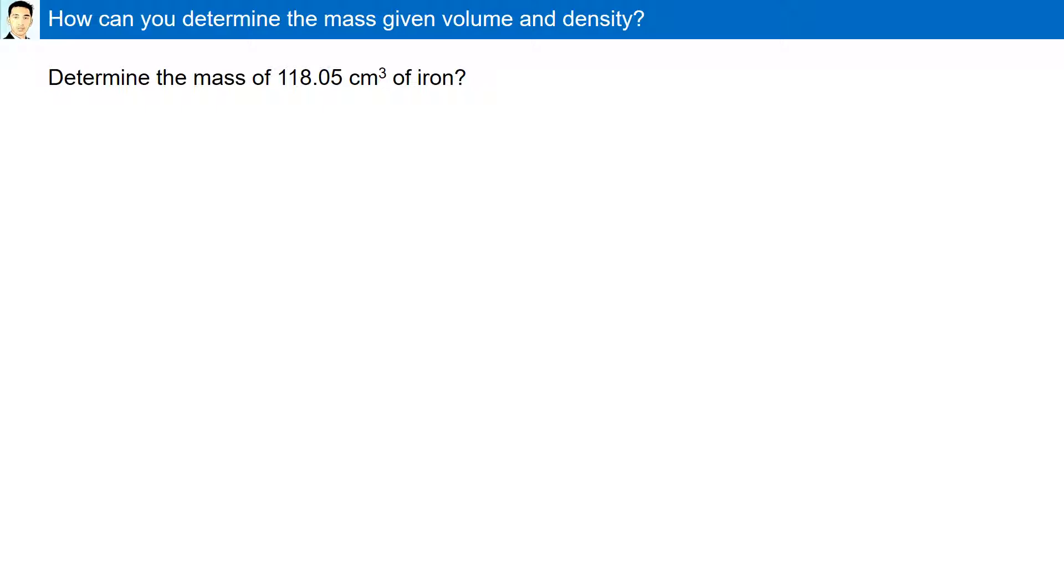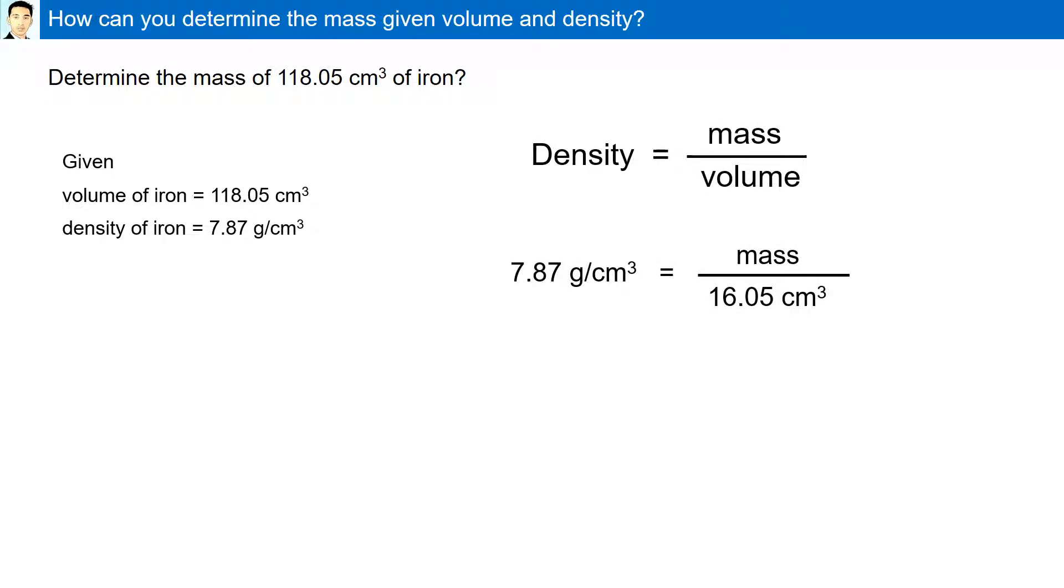How can we determine the mass given the volume and density? Determine the mass of 118.05 centimeter cube of iron. Here we are given the volume as 118.05 centimeters cube. The density is not given, therefore we can look this up in reference table S. It is 7.87 gram per centimeters cube. Using our formula, density is equal to mass over volume. Substituting our values, we have 7.87 gram per centimeter cube is equal to mass divided by 16.05 centimeter cube. Rearranging the formula, we have 126 grams.